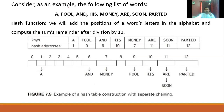Consider this example: a list of words — 'a', 'for', 'and', 'is', 'money', 'or', 'parted'. We want to store these in a hash table using a hash function defined as: add the position of each letter in the alphabet and compute the sum's remainder after division by 13.